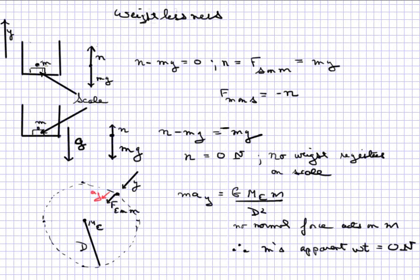And so if we draw a force diagram using y up as my positive direction, that would give me from this free body diagram n minus mg equals zero, and therefore n, which is equal to the force of the scale on m, equals mg, which is its normal weight.